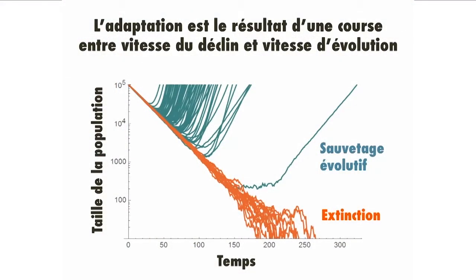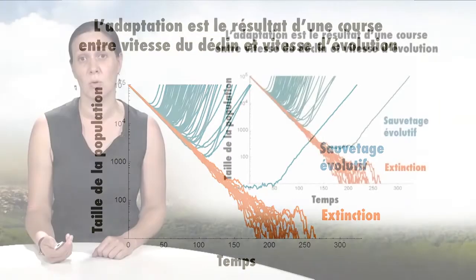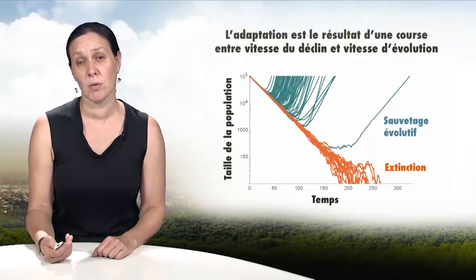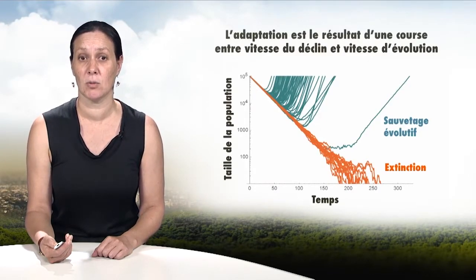This is the simulated trajectory of a thousand populations initially in decline. The blue populations show cases where adaptation was fast enough to evolve within the stressful environment after a period of initial decline. However, a large number of populations became extinct before they were able to evolve and adapt. The simple existence of genetic variants adapted to new environments is insufficient to ensure the long-term survival of a given population.